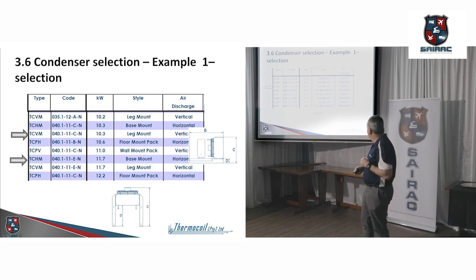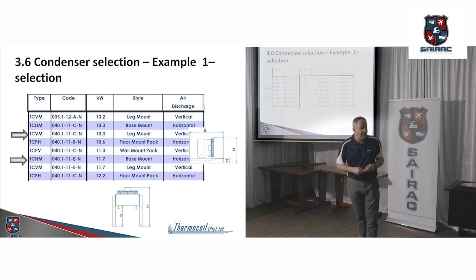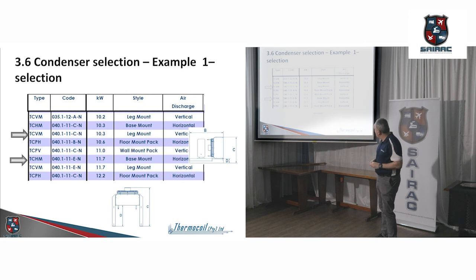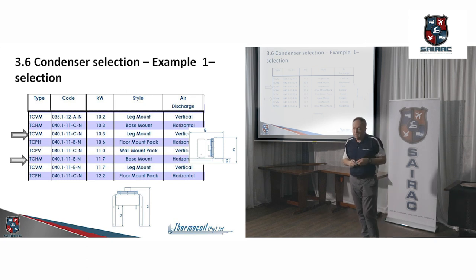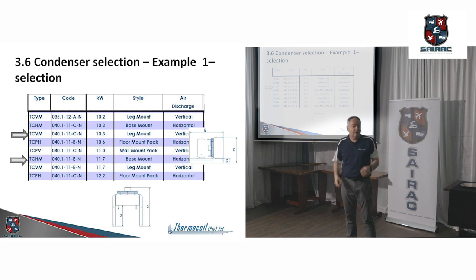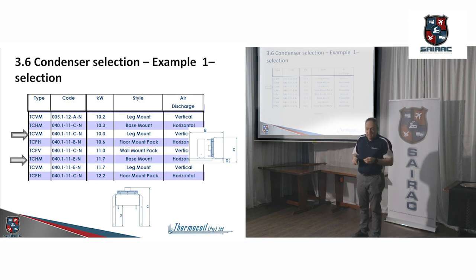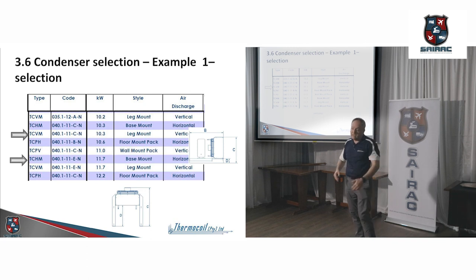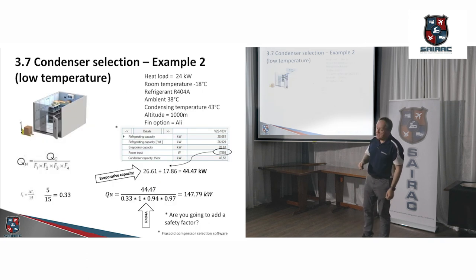Our target there was 10.87. You go to your tables: 10.87, 10.3. Are you happy with 10.3? It's a big mounted horizontal. That's an option. Basically what I'm trying to get you to understand is you calculate the value and then you look at the nominal values in the table. Just read the instructions from the supplier that you're working with. It's not that complex. When you apply an altitude factor, obviously the air is thinner. When you apply a different refrigerant, some refrigerants are more effective than others.